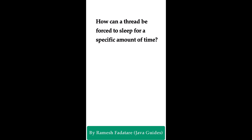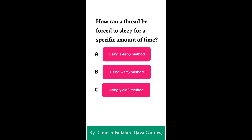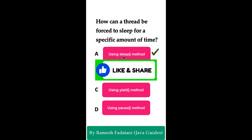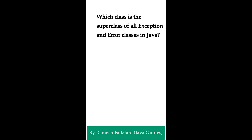How can a thread be forced to sleep for a specific amount of time? Option A: using sleep() method. Option B: using wait() method. Option C: using yield() method. Option D: using force() method. The correct answer is option A — using the sleep() method. In Java, sleep() is a static method belonging to the Thread class. It forces the current thread's execution to pause for a specific number of milliseconds. The sleep() method is useful for creating delays in program execution or managing the timing of thread operations.